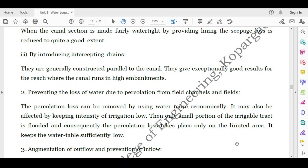Then preventing the loss of water due to percolation from the field channels and the fields. The percolation loss can be removed by using water more economically. It may also be affected by keeping intensity of irrigation low. Then only small portion of the irrigable tract is flooded and consequently the percolation loss takes place only on the limited area. It keeps the water table sufficiently low. So if you are irrigating your farm very precisely, economically, and if you are irrigating a particular tract with sufficient water, then only that portion of land or the farm, that tract will be flooded and consequently percolation losses will be less. So there will be no rise in the water table and ultimately there will be no water logging.